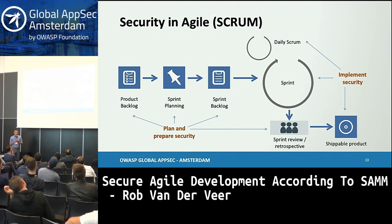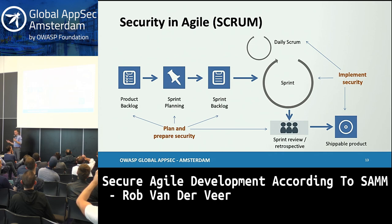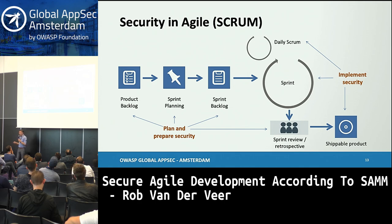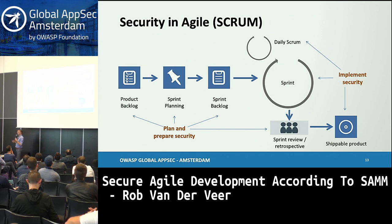A brief one-on-one on Agile — I'm taking the popular Scrum method as an example. You're doing sprints: iterative release and building of software in two to four weeks, with a team of typically eight to ten people of builders and testers. You're preparing your work in a backlog, planning your work to be done in a sprint resulting in a sprint backlog. You're planning and preparing security, implementing security during the sprint, leading to a shippable product. You also have daily scrums, stories, definitions of done, and acceptance criteria — all these typical Agile Scrum elements.